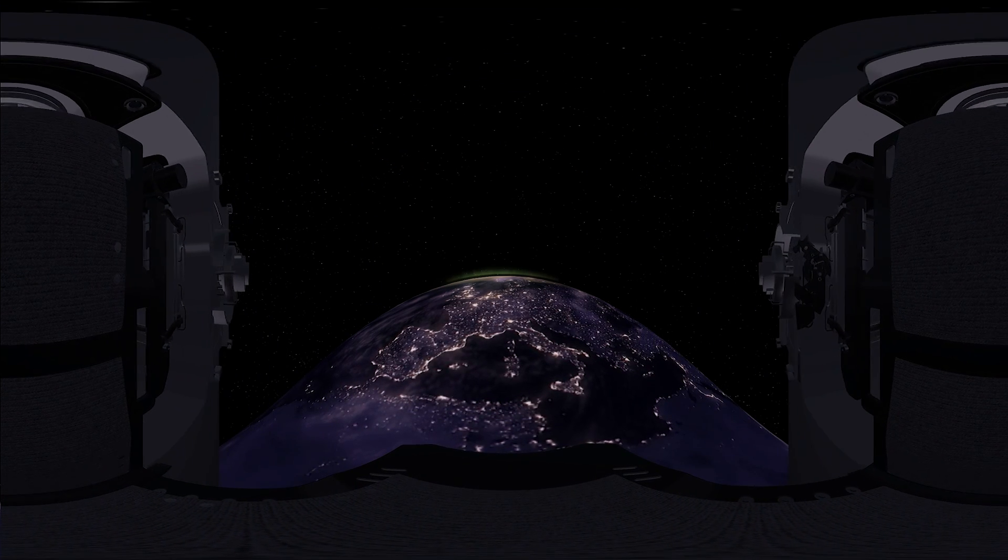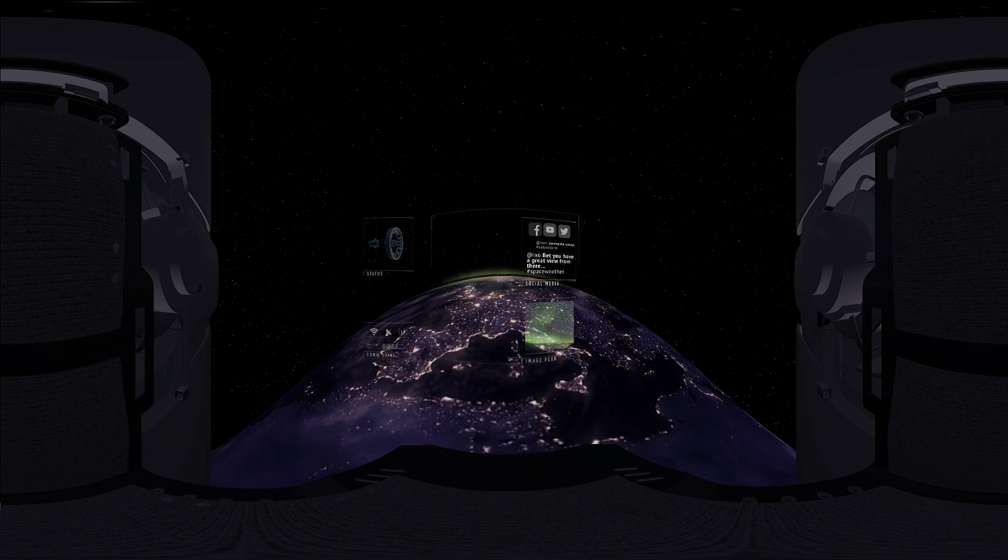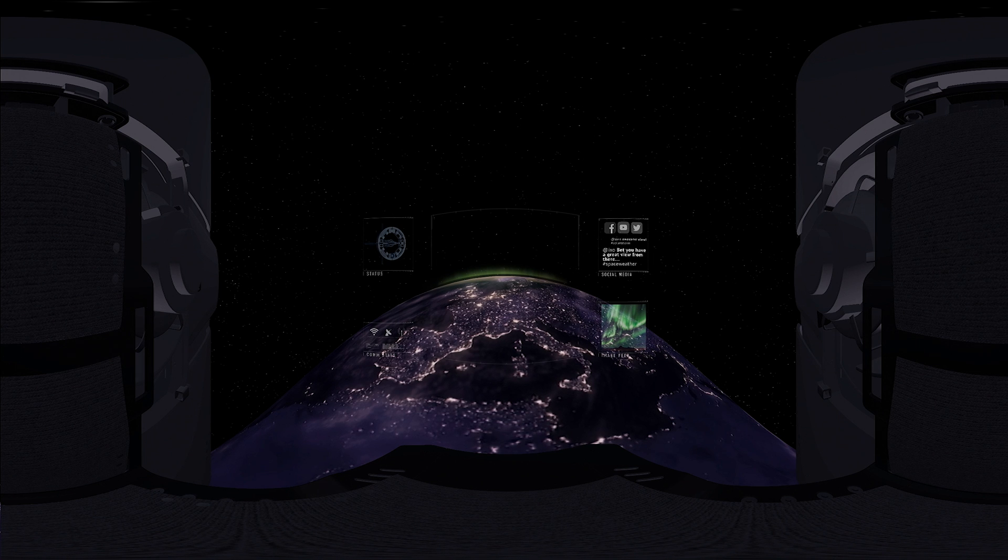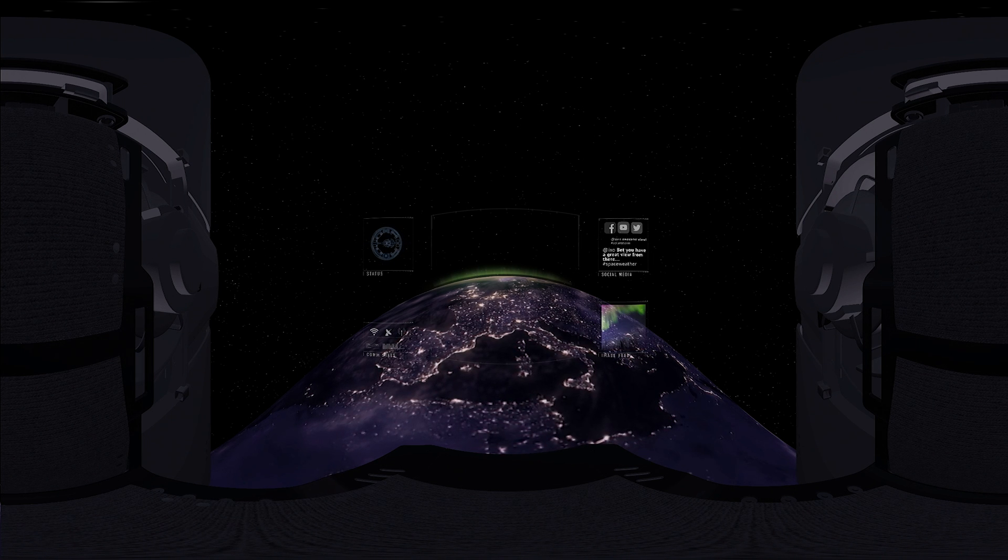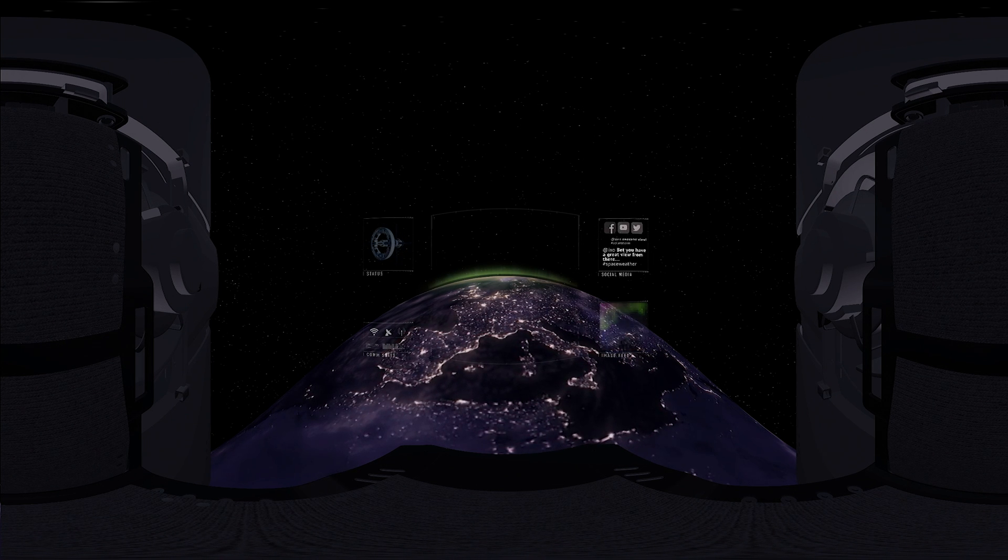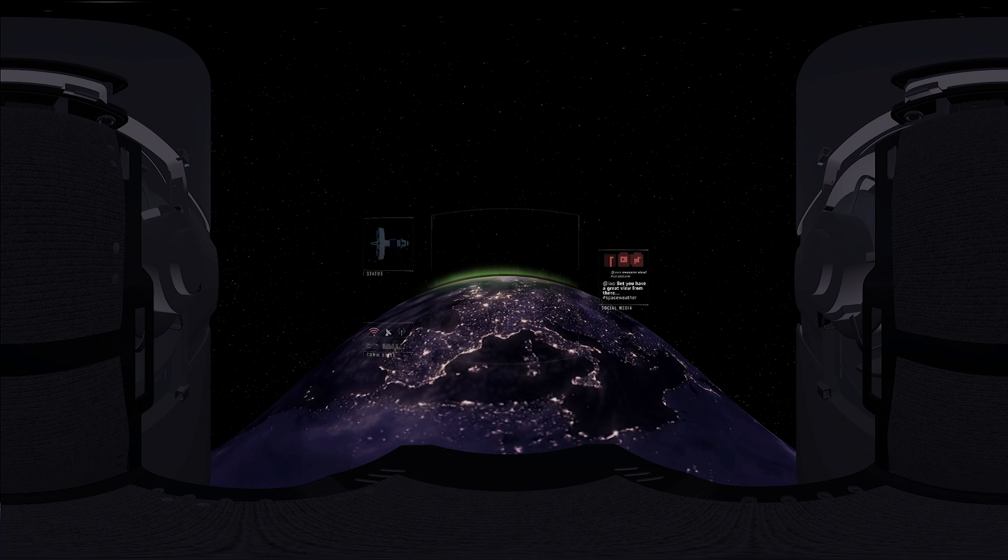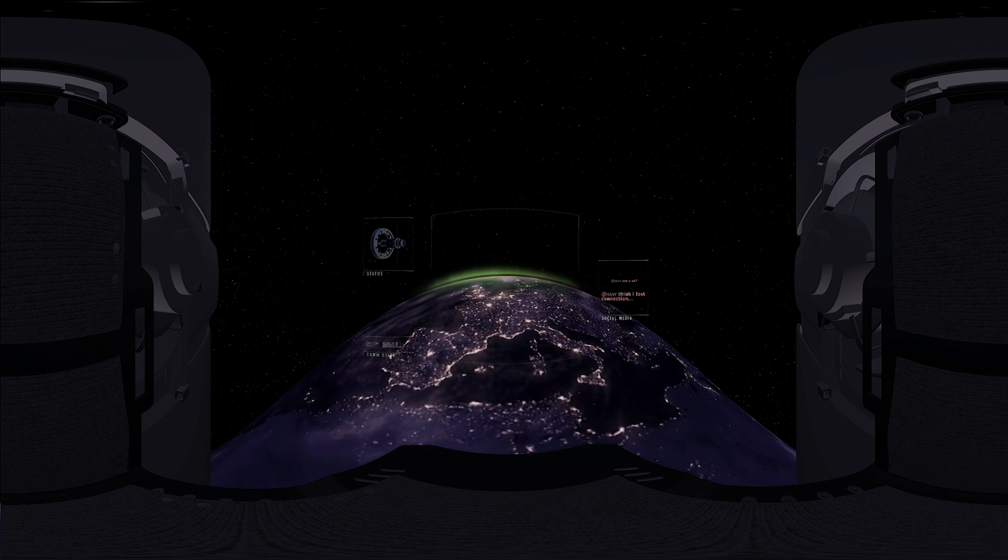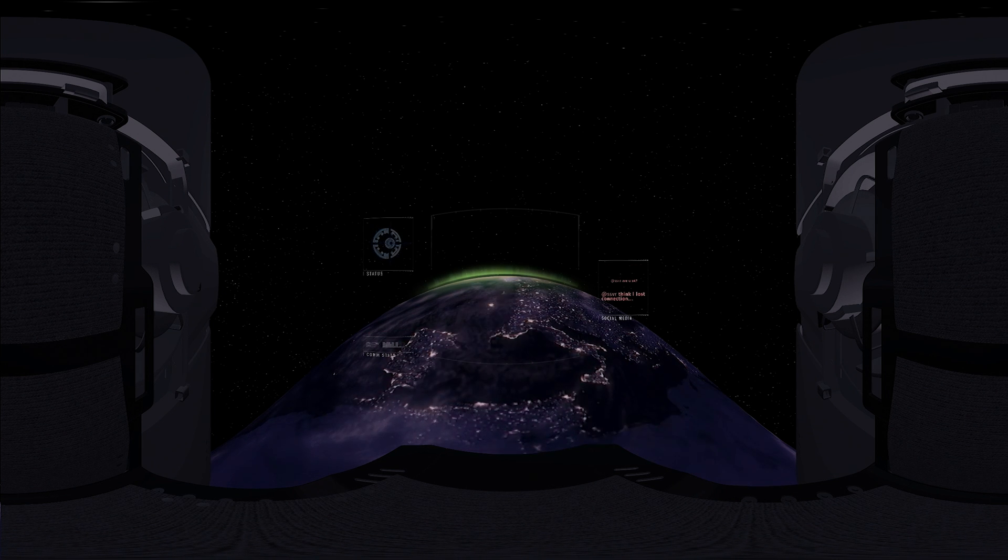Solar storms are responsible for the beautiful auroras that can be seen at the North and South Poles. They can also disrupt human societies in a big way. They can affect GPS and telecommunications systems and disrupt our electricity grids.